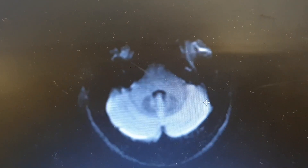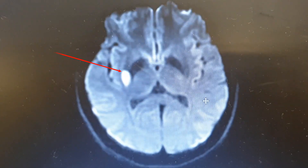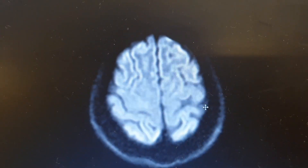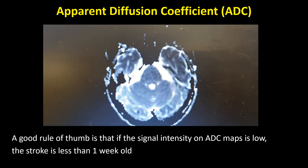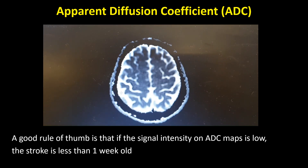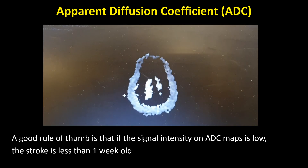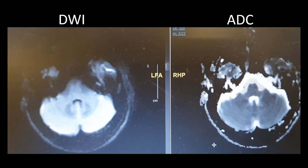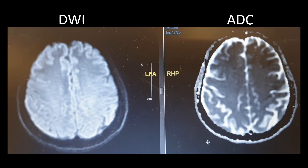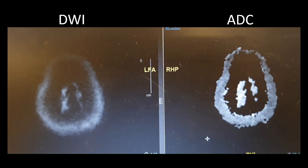This is a patient who presented with an acute onset of left-sided weakness. There is a DWI hyperintensity in the right putamen extending to the right corona radiata. A good rule of thumb is that if the signal intensity on the ADC map is low, the stroke is less than one week old. The DWI is shown side by side with the ADC sequence, demonstrating DWI hyperintensity with corresponding restricted diffusion on ADC map, compatible with an acute infarction over the right putamen extending to the right corona radiata.